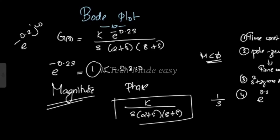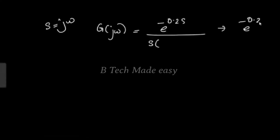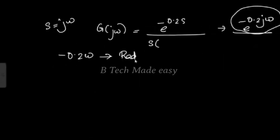Now let's look at the phase plot. Substituting s = jω: G(jω) = e^(−0.2jω) / [jω · (1 + 0.2jω)(1 + 0.5jω)]. The angle of e^(−0.2jω) is −0.2ω radians per second, which needs to be converted to degrees: −0.2ω × (180/π).